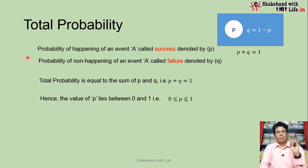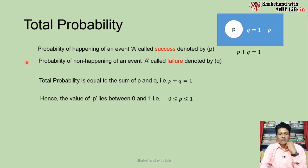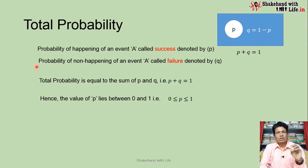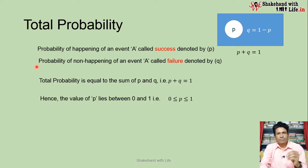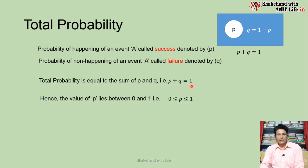Suppose the probability of happening of an event A is called success and is denoted by p. And the probability of non-happening of an event A is called failure and is denoted by q. Happening of event A is known as success, denoted by p, and non-happening of event A is known as failure, denoted by q.